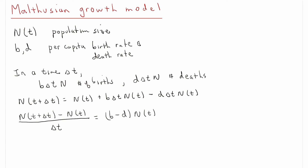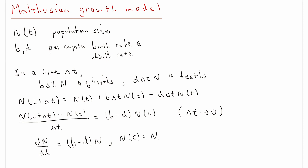Now we take the limit as delta t goes to zero. The left-hand side then becomes a derivative, and we end up with the differential equation dn/dt equals b minus d times n — the difference between the birth rate and the death rate times n. If the birth rate is larger than the death rate, the derivative is positive; if the birth rate is smaller than the death rate, the derivative is negative. This is a first-order differential equation. We need some initial value of the population size to solve it, so we choose that the initial population at t equals zero is given, and we'll call that n naught.